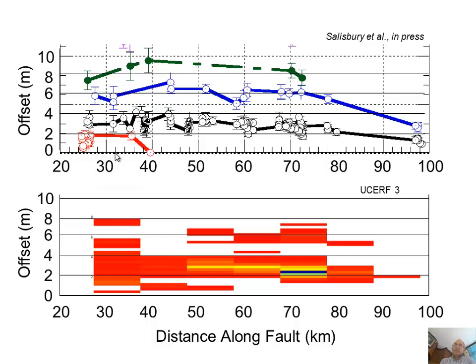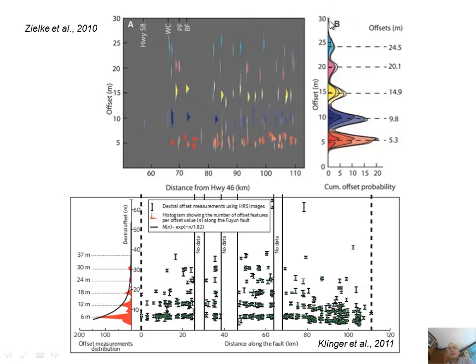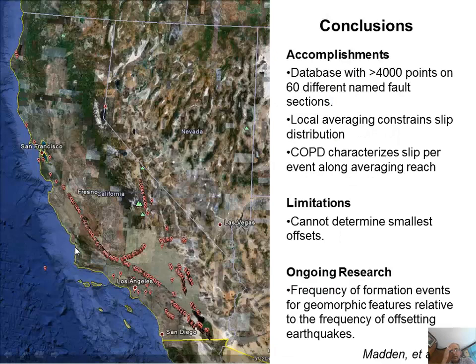We see this approach with other data sets. Here's the Zielke et al. cumulative offset probability with regular offset magnitudes, and here's the Klinger et al. that I showed before. This work started to analyze all these offset groups along faults in California and build a uniform database of offsets — the same thing working to find confident offsets and accumulate them in the database so people can study them.